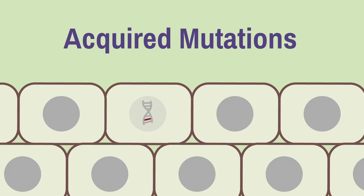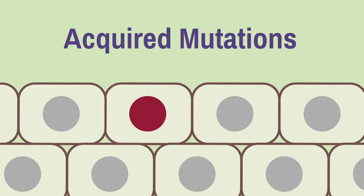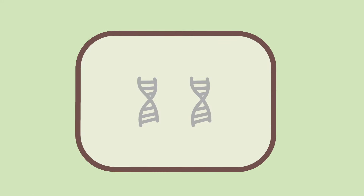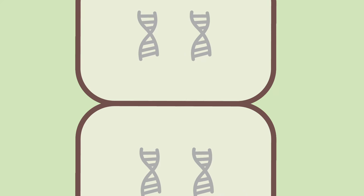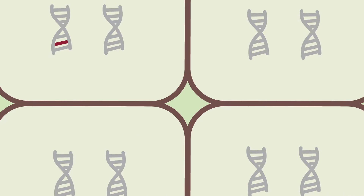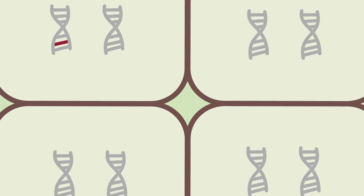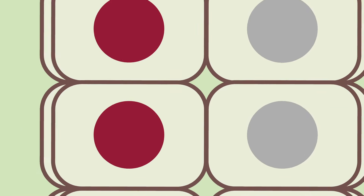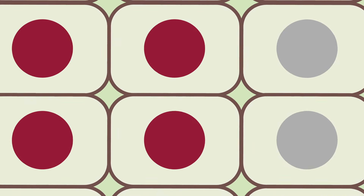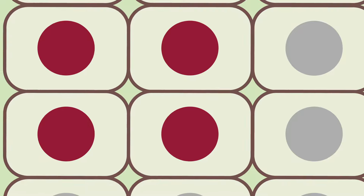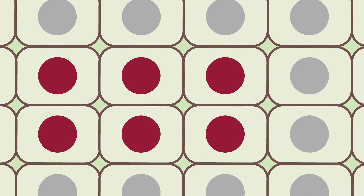Mutations that happen during a person's lifetime are called acquired mutations. If a cell divides to make new cells, it makes a copy of its DNA, and one copy goes into each new cell. Any mutations present are also copied and passed along to the new daughter cells. In other words, once a mutation happens, all of the cells that come from that parent cell will carry the new mutation.